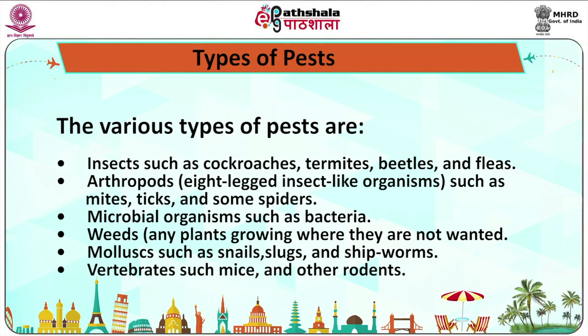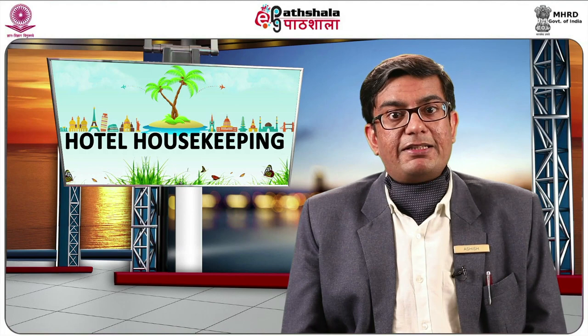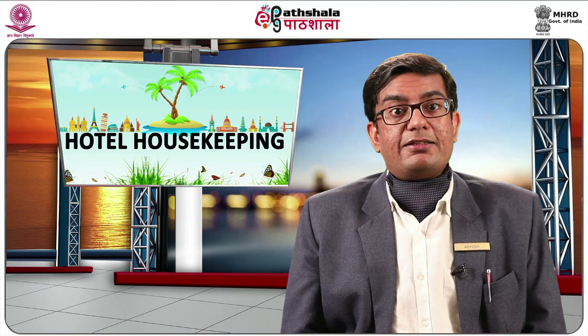Various types of pests include insects such as cockroaches, termites, beetles and fleas. There may be 8-legged organisms and examples include mites, ticks and some spiders. There may be certain microbial organisms such as bacteria, weeds — any plants growing where they are not wanted — molluscs such as snails, slugs and shipworms. There may also be mice and other rodents. Most organisms are not pests. A species may be a pest in some situations and not in others. An organism should not be considered a pest unless it is proven to be.